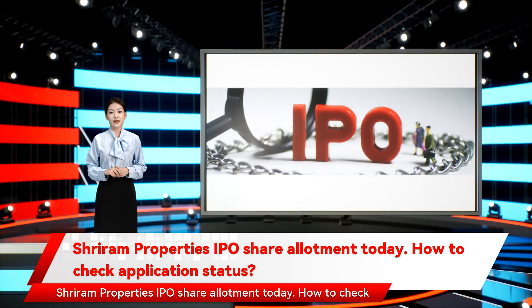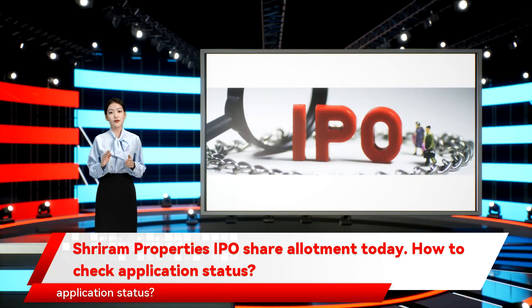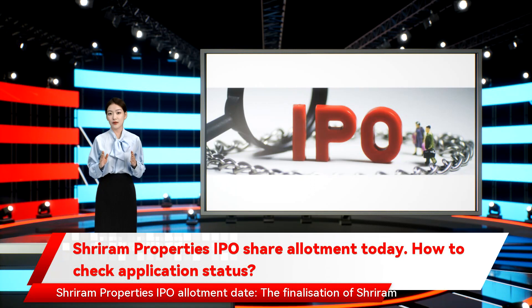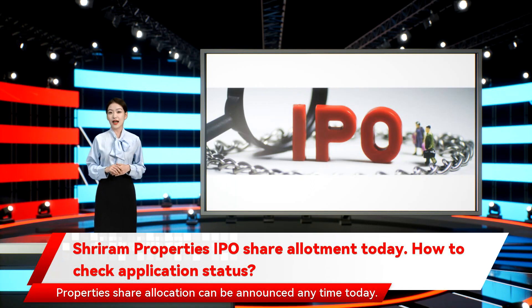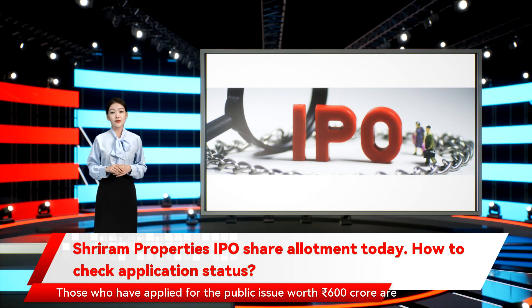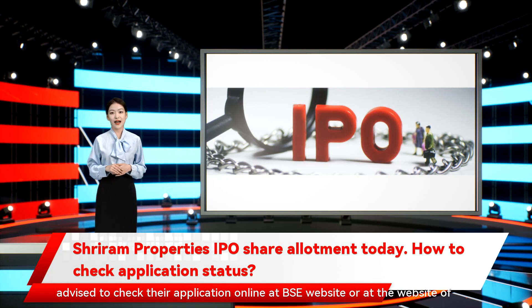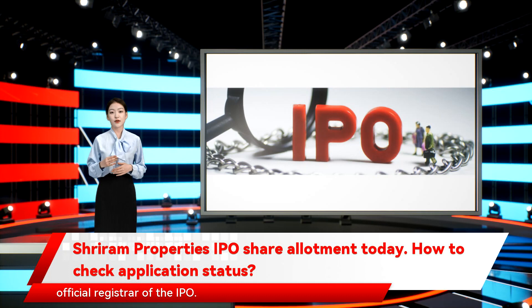Shriram Properties IPO share allotment today — how to check application status. The finalization of Shriram Properties share allocation can be announced anytime today. Those who have applied for the public issue worth 600 crore rupees are advised to check their application online at the BSE website or at the website of the official registrar of the IPO.